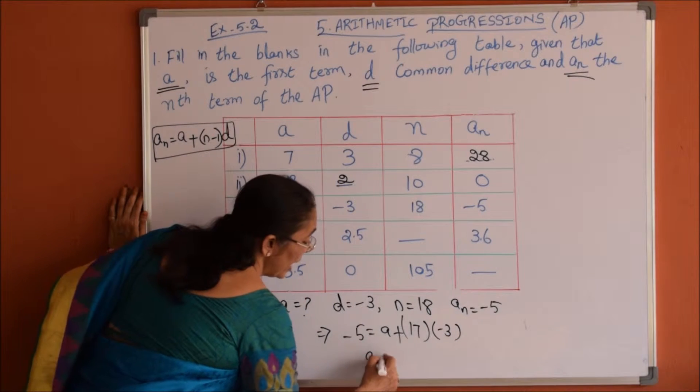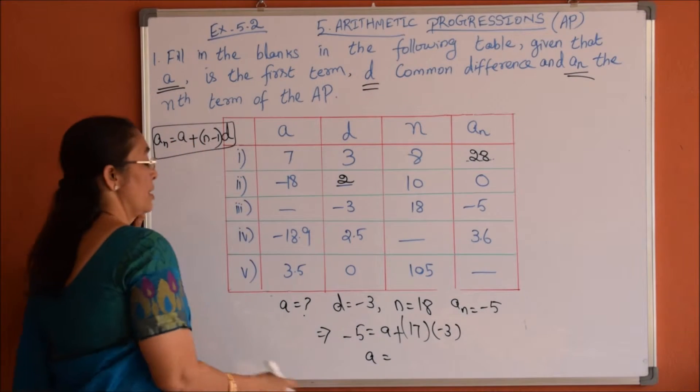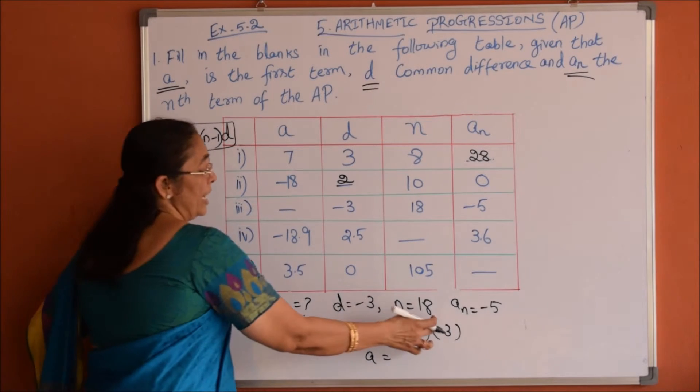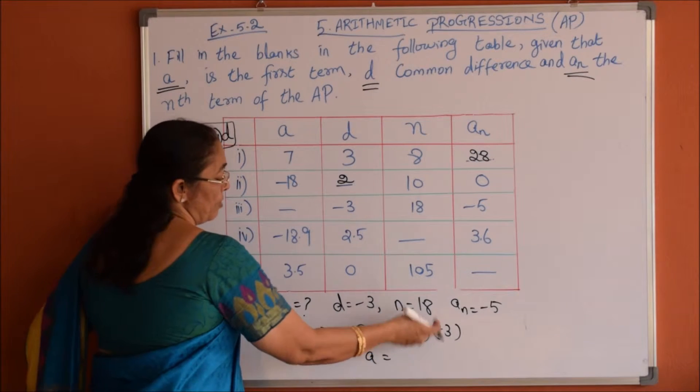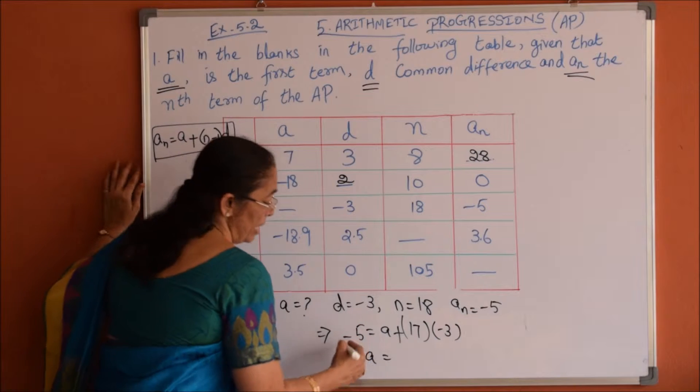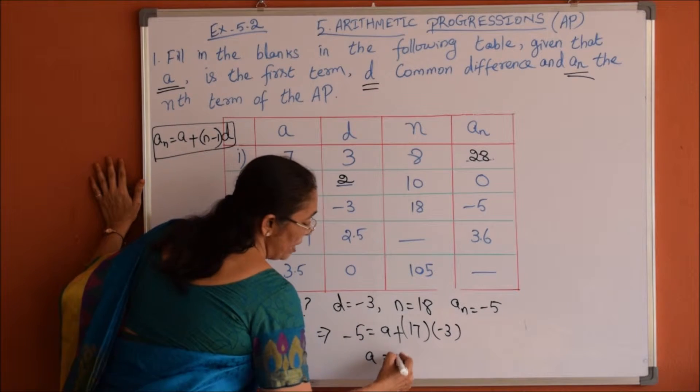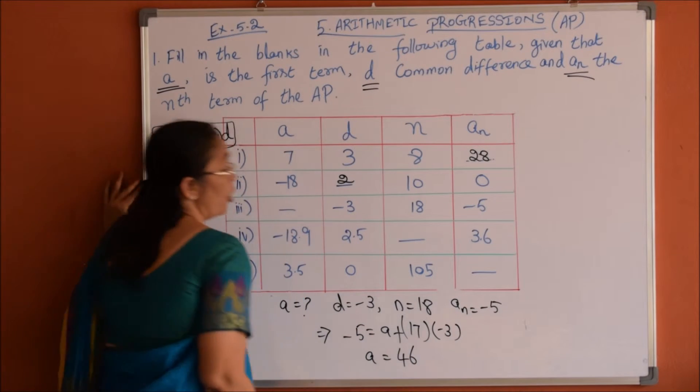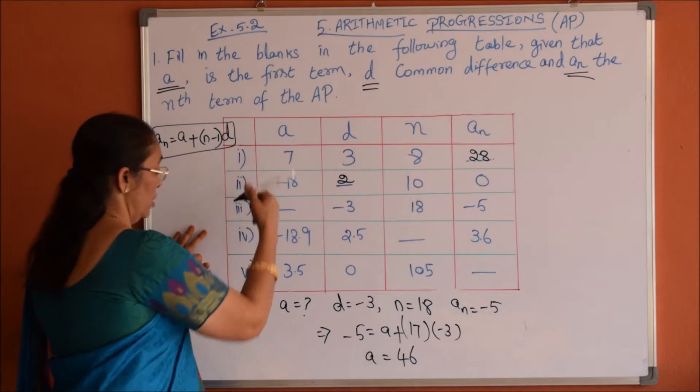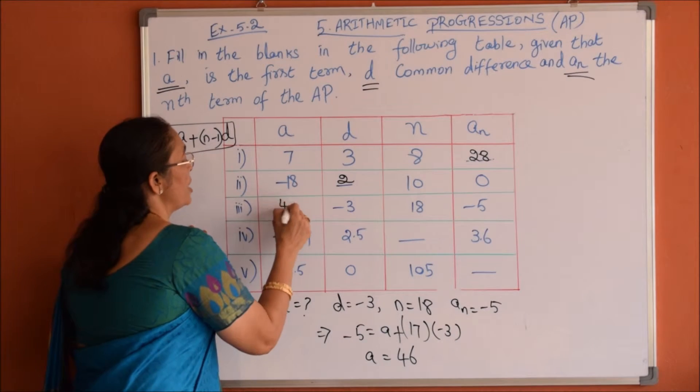This gives us a equals minus 5 minus (17 times minus 3), which is minus 5 plus 51, equals 46. So for the third one, a value is 46.